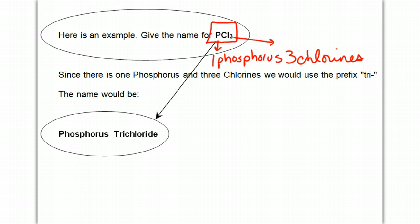So to translate that, one, the prefix is mono, but again, remember, we're not going to start with mono. So really, I'm just going to start this with phosphorus, and because there are three chlorines, the prefix for three is tri.